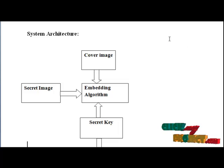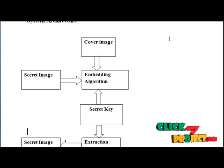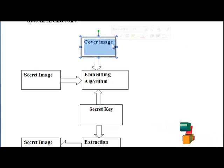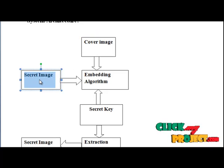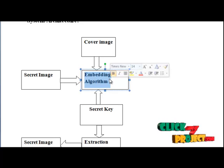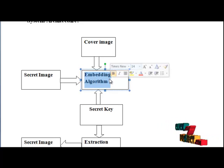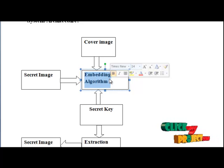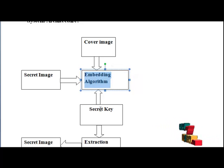Now let's have a view on the data flow diagram. First, we load our cover image, and then we load our secret image — that is our message-to-hide image. With the help of RSI and LSB method, the embedded message is converted, and then it is associated with the secret key.